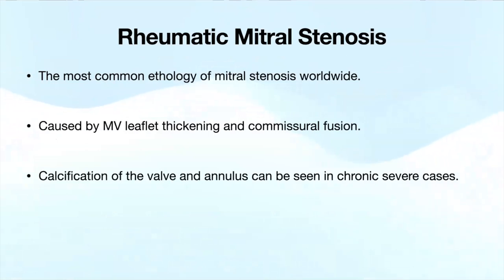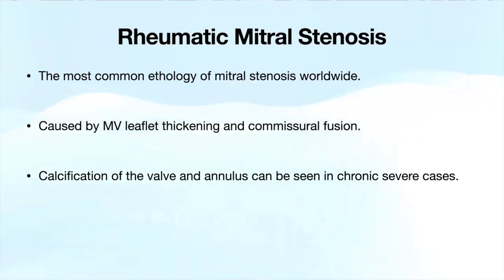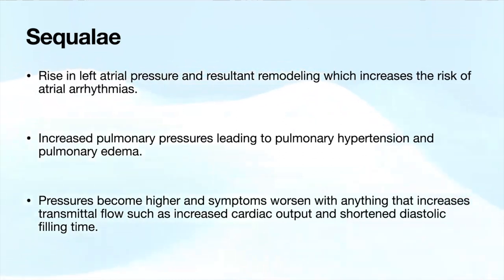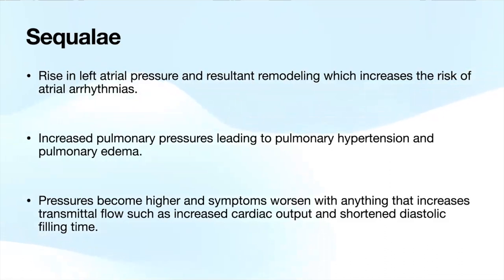Now we go into the chronic changes. The most common finding is rheumatic mitral stenosis—rheumatic heart disease is also the most common cause of mitral stenosis worldwide. Its main mechanism is mitral valve leaflet thickening and commissural fusion; in chronic severe cases, you can see calcification of the valve and annulus. Sequelae include rise in left atrial pressures, left atrial dilation and remodeling—increasing the risk of atrial arrhythmias—pulmonary hypertension, and pulmonary edema. Transmitral gradients are always flow dependent, so anything that increases cardiac output or shortens diastolic filling time, such as increased heart rate, will worsen symptoms.